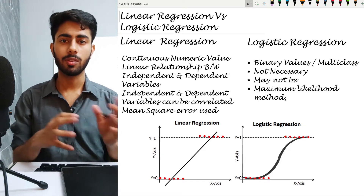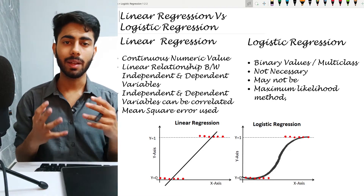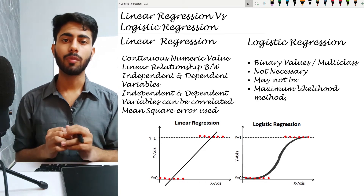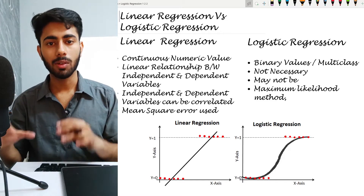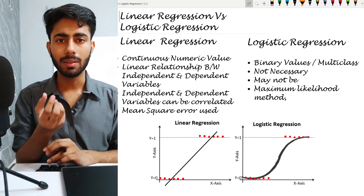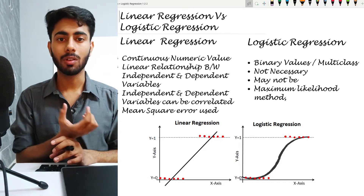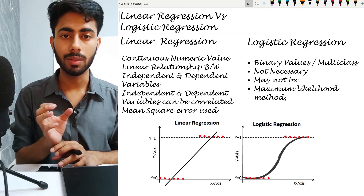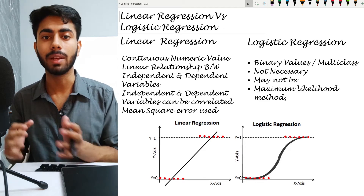Now let us discuss the difference between linear regression and logistic regression. By now we know that both are supervised machine learning problems — they both need a labeled dataset. But what is the difference? First, linear regression belongs to the family of regression algorithms, and logistic regression belongs to the family of classification algorithms. The word 'regression' appears in logistic regression because its working principle is very similar to that of linear regression.